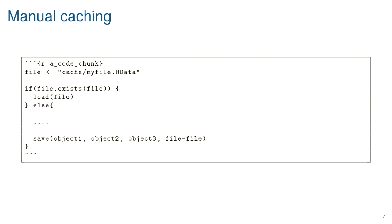Manual caching is rolling your own solution so results only get run when you need them. Say you have code that takes five minutes to run — you only want to run it once. In R Markdown, save the results to a file: first an `if` statement that says if the file exists, just load it; otherwise run the five minutes of calculations and save to a file. If results have already been obtained, it just loads from file; if not, it runs the calculations and saves them.